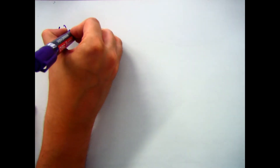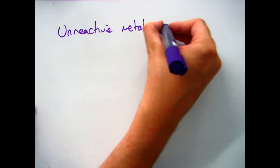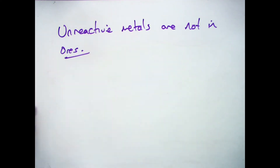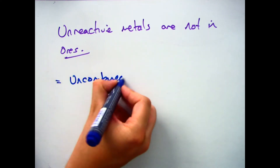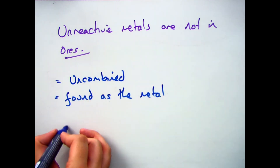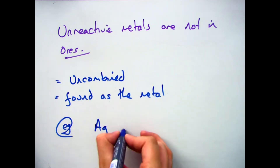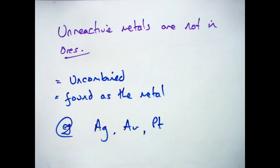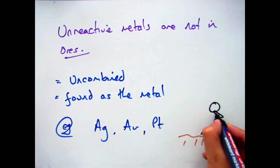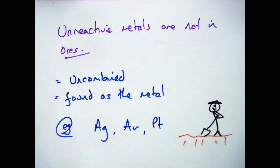Not all metals are actually found in ores. There are some really unreactive ones that are found uncombined in the earth, just as the metal. Those are silver (Ag), gold (Au), and platinum (Pt). All you need to do with those ones is dig them out of the ground, because they're already existing as their metals.